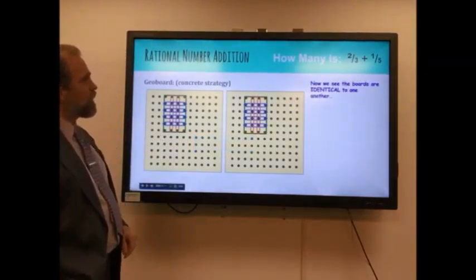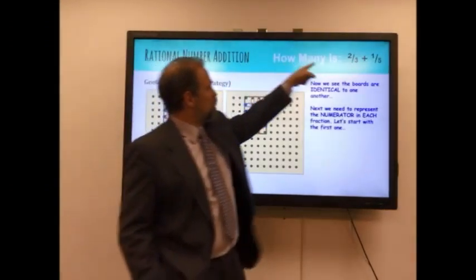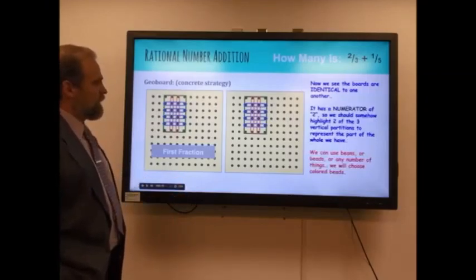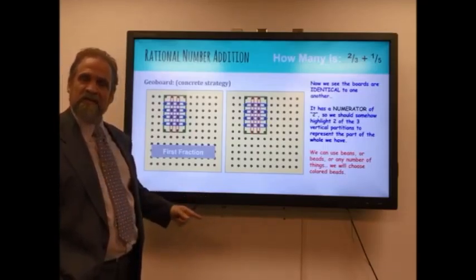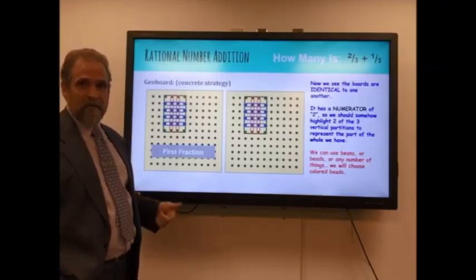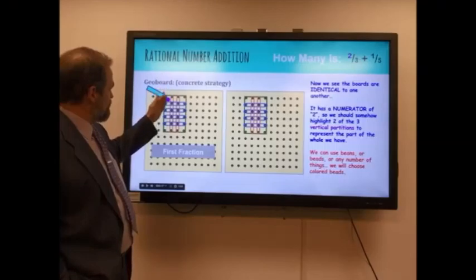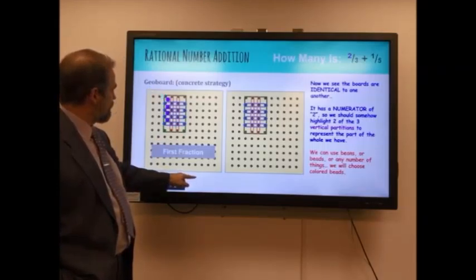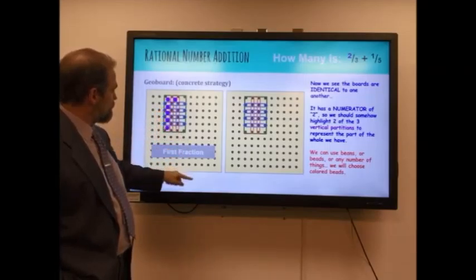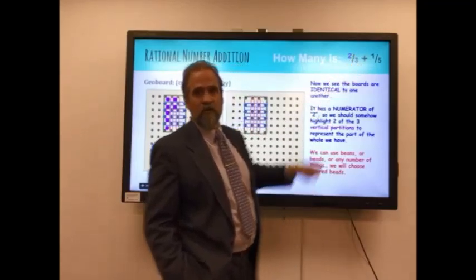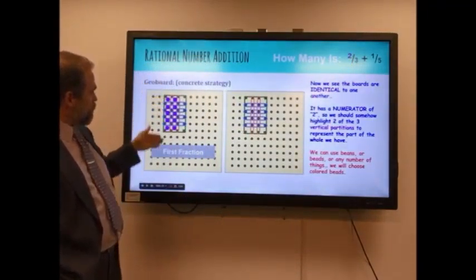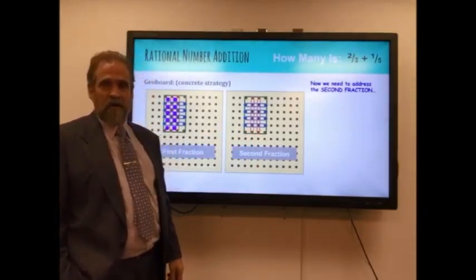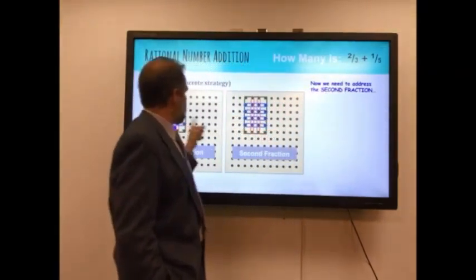And now when I look at them, they are identical. So they're divided up in a common way. All the partitions are the same in number and size. That means these fractions are identical to one another until I do the numerators. So now we're going to deal with the numerators. The first fraction's numerator is two-thirds. And the thirds are cut up vertically. One, two, three. So I'm going to cover two of them. I'm going to use colored beads. We could use nickels and pennies, beads, beans, a lot of things. But they've got to be small enough to fit in the geoboard.